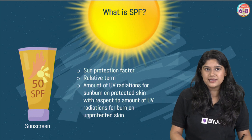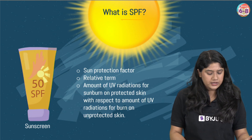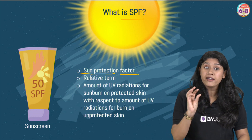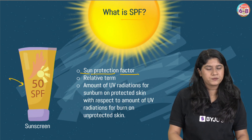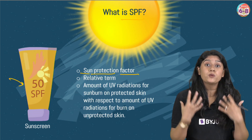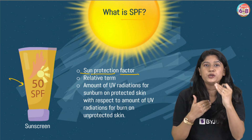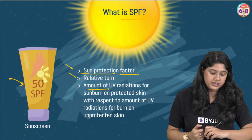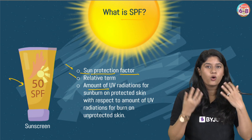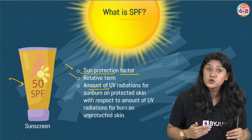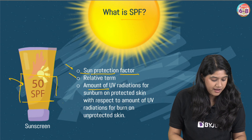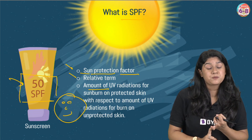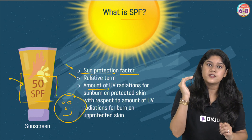Now let's understand more about SPF. What is SPF? It stands for Sun Protection Factor. In sunscreen, we usually go for a higher SPF value. For example, we have SPF 50, which means it will provide more protection to the skin from harmful UV radiation. SPF — Sun Protection Factor — reduces the amount of UV radiation that causes sunburn or harmful effects on the skin. Using a higher SPF is really very important.